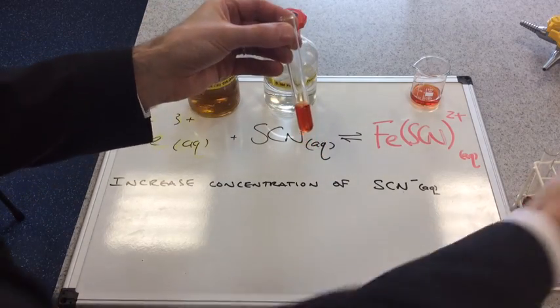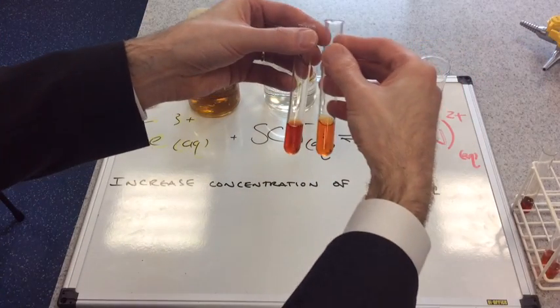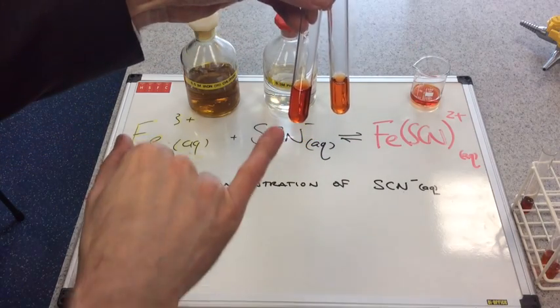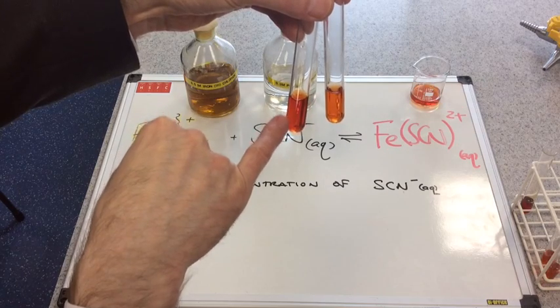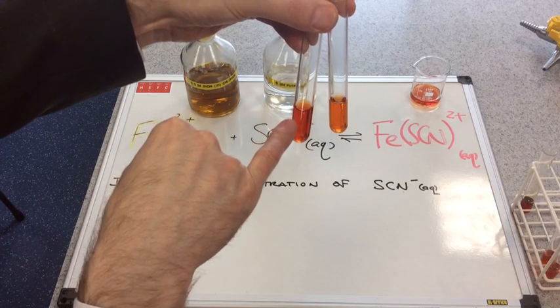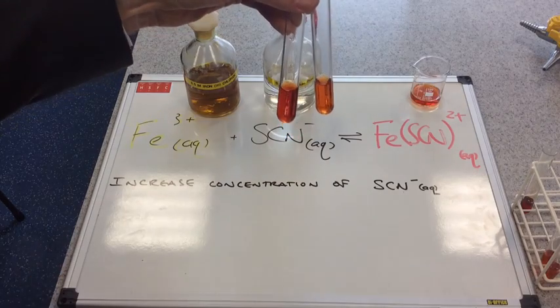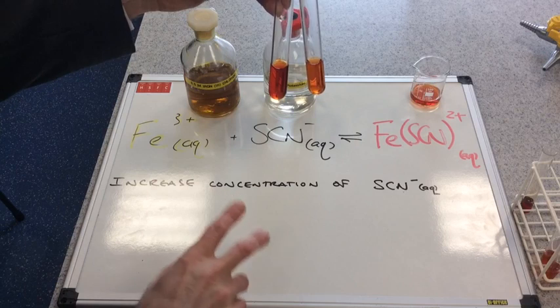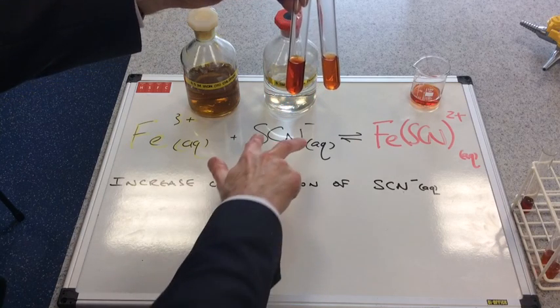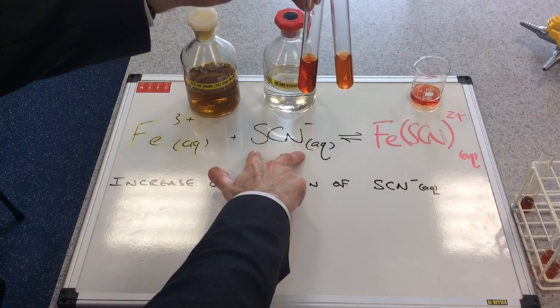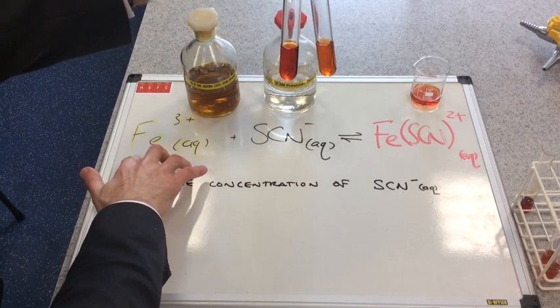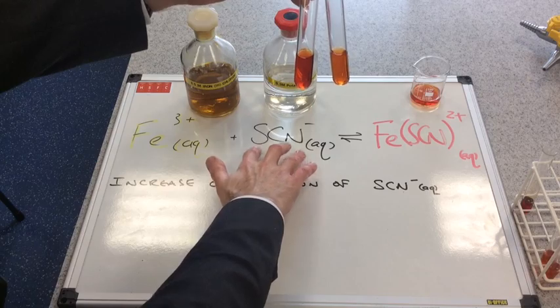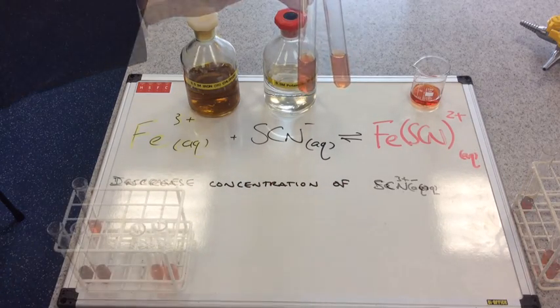So there's the test tube. I'll bring the control back. And hopefully you can see that the tube that I've just added the drop of thiocyanate to is darker than the control tube. So that means the equilibrium has moved to the right. It's the same argument as before. We've increased the concentration of one of the reactants. Therefore, iron 3 plus ions react with these extra thiocyanate ions and therefore the equilibrium shifts over to the right.